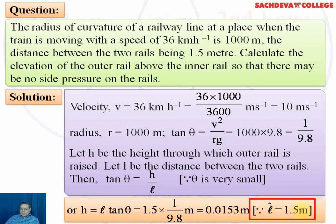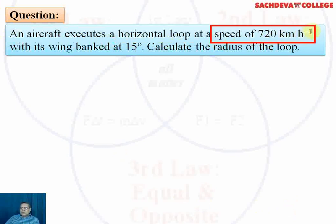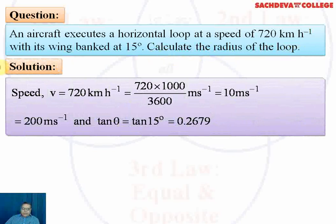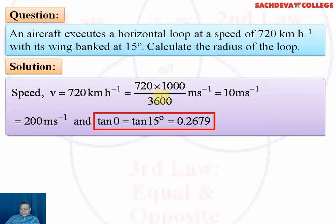With l given as 1.5 meters, the next question concerns an aircraft executing a horizontal loop at a speed of 720 kilometers per hour. Converting: 720 km/h × 5/18 = 200 meters per second. With wings banked at 15 degrees, we have to calculate the radius of the loop. tan 15° is found from log tables to be 0.2679.